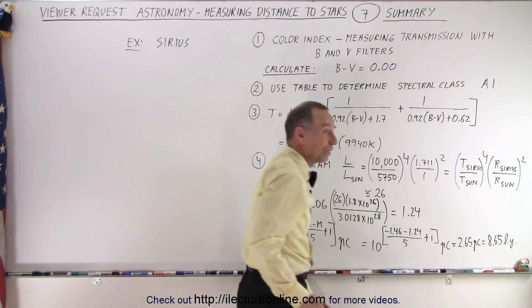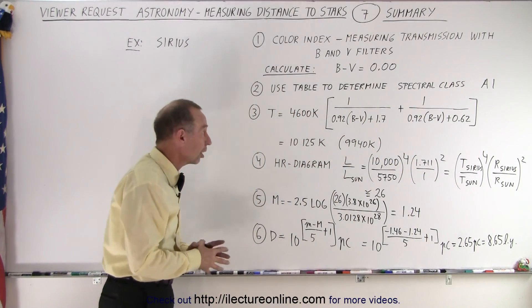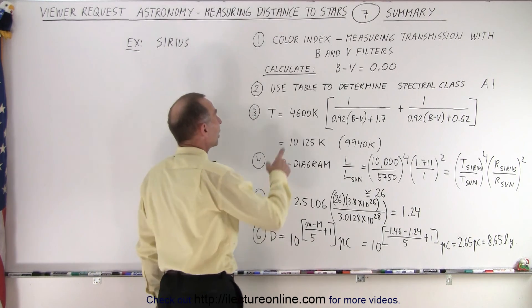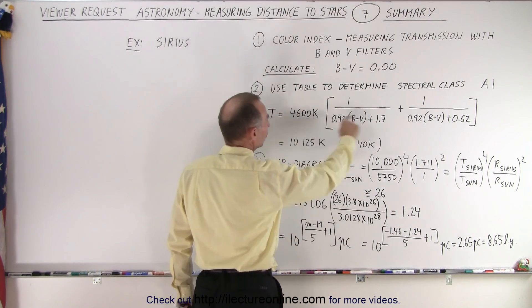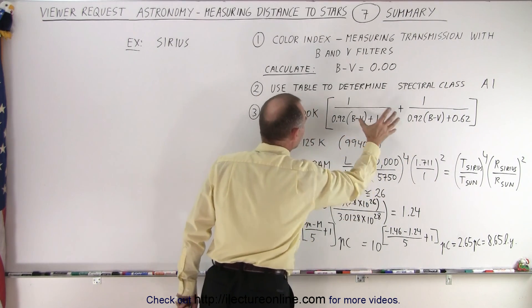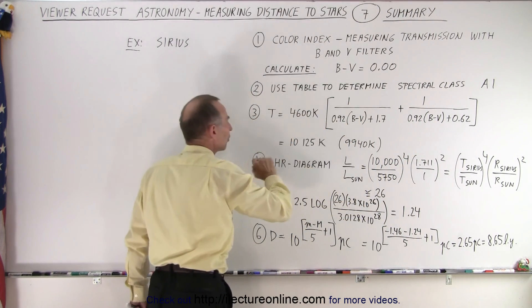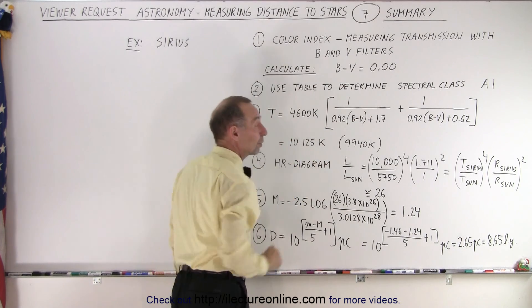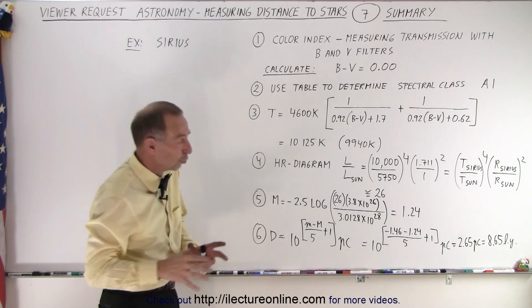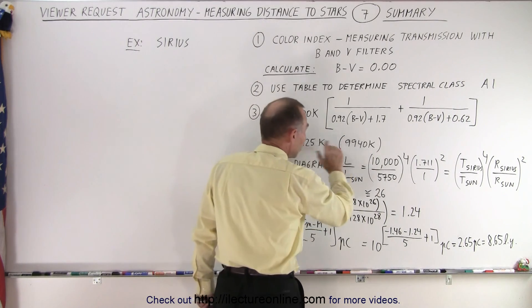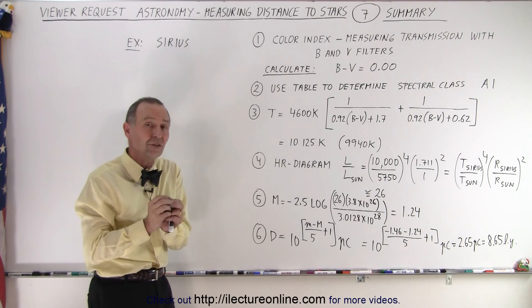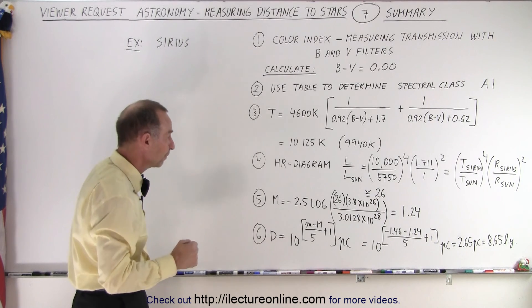In the case of Sirius we're dealing with an A1 type star. Then we calculate the temperature based upon the color index and the temperature equations, where B minus V goes into the equation. This calculation for Sirius gives you something slightly over 10,000 Kelvin, when we know the actual temperature is more around 9,940 — again indicating that nothing in astronomy gives you the perfect answer, just a close answer.